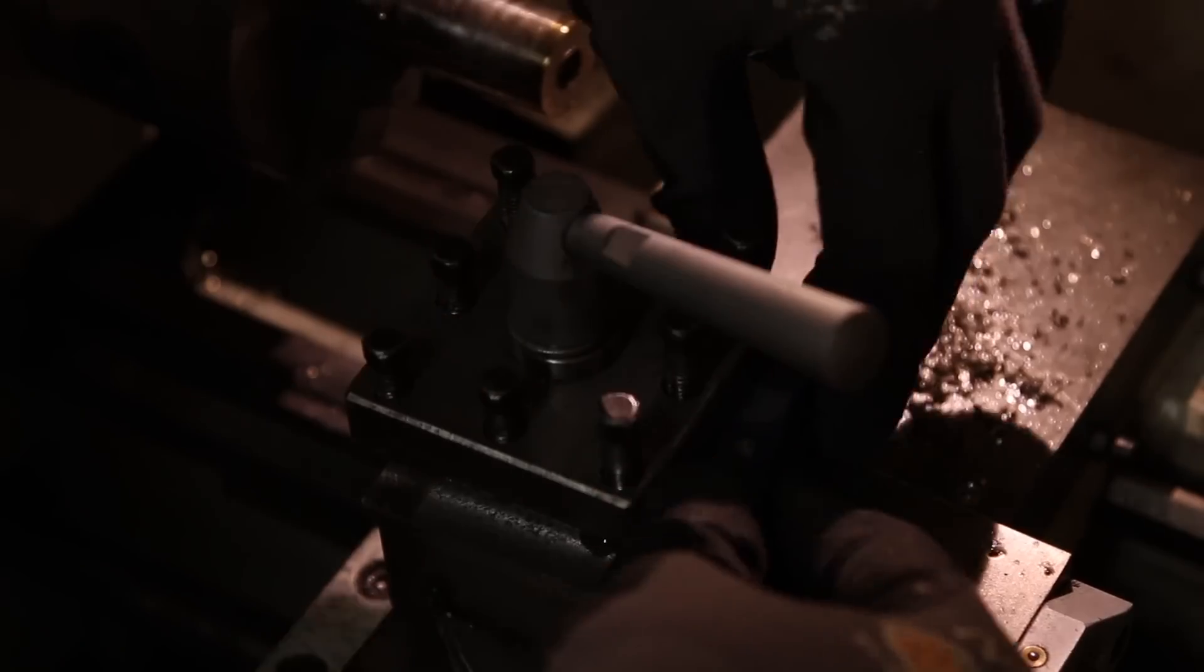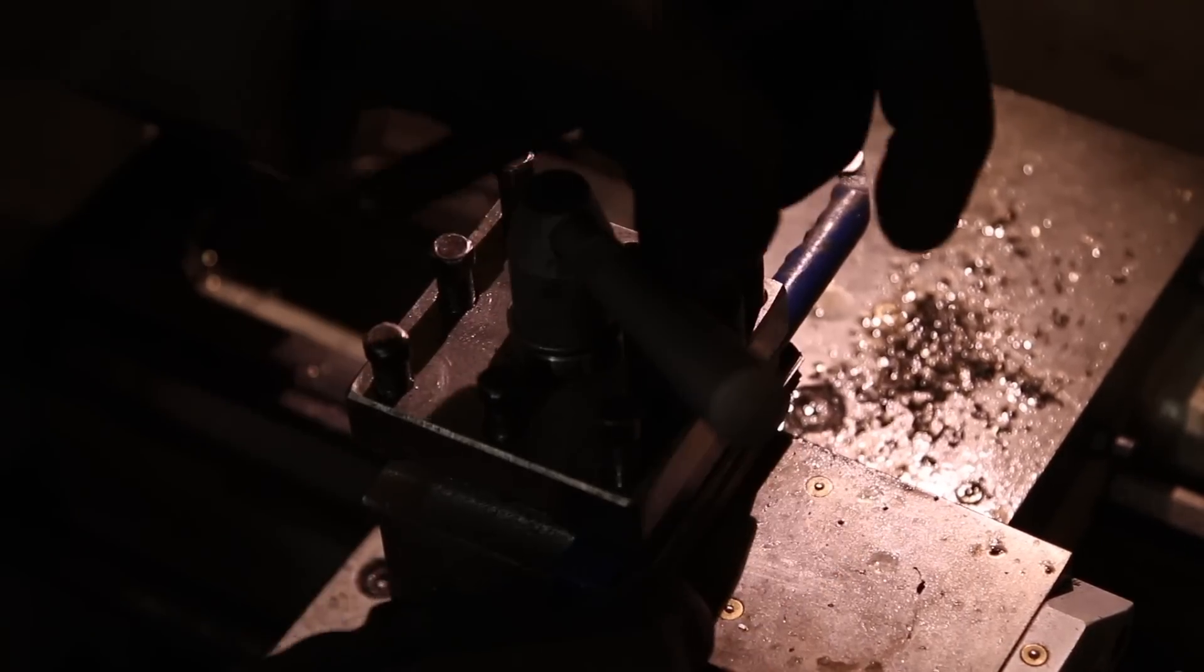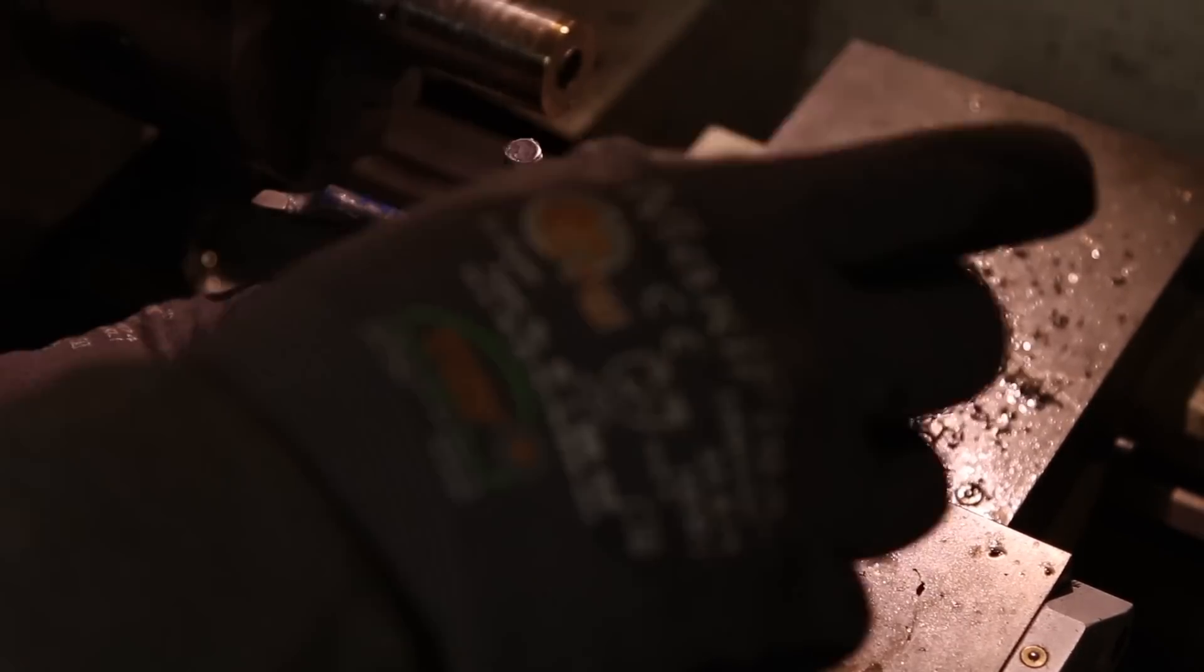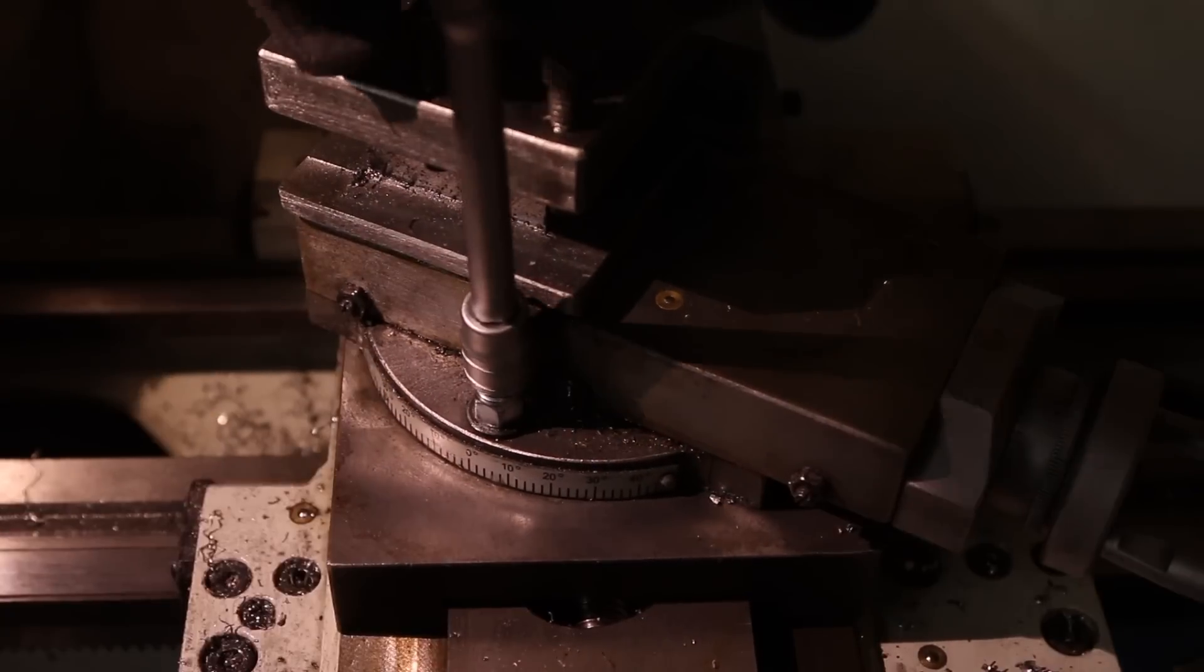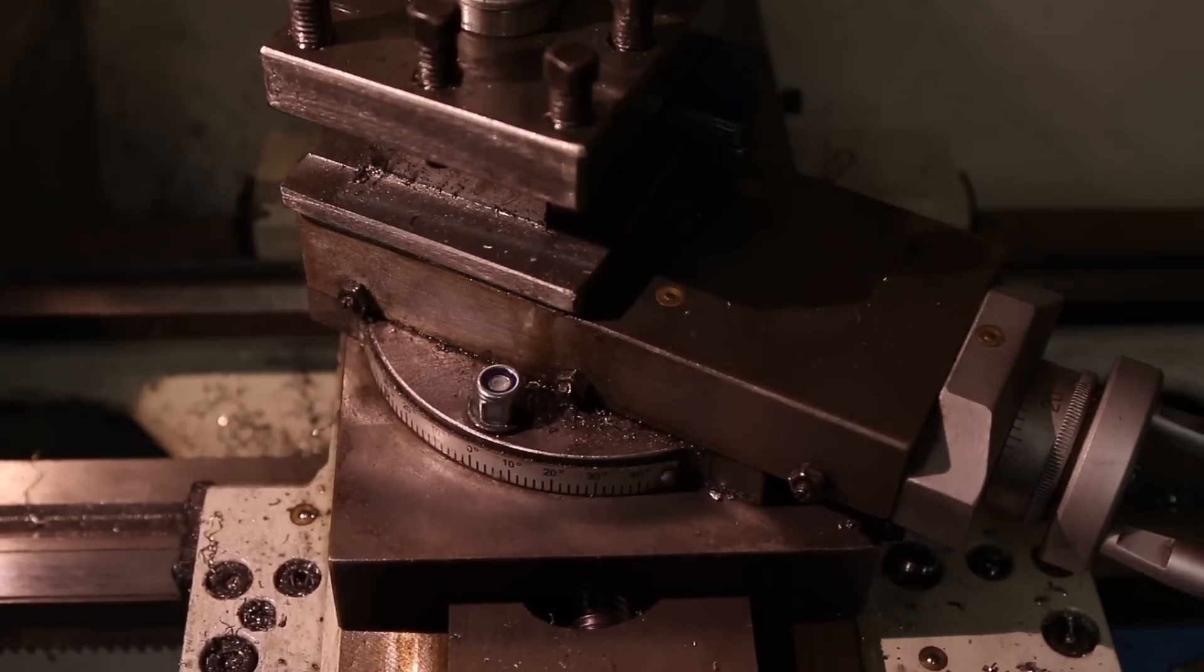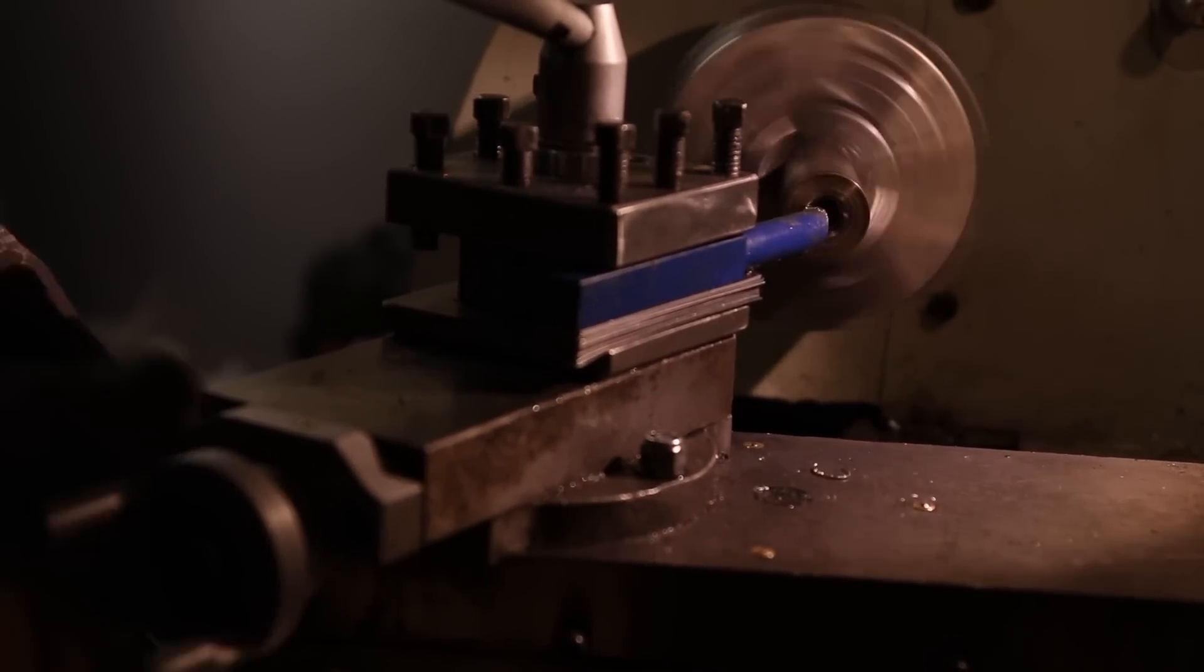Now we're going to do an angle on this because this is going to be the inlet side. So I'm going to do a 30 degree angle which is going to result in a 60 degree cone. And this is so you get the perfect acceleration of the gases exiting the nozzle hole.